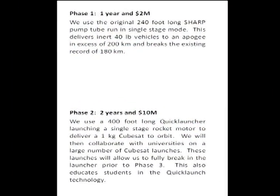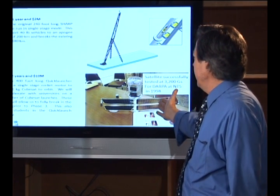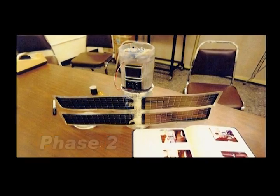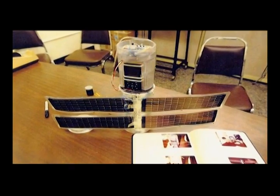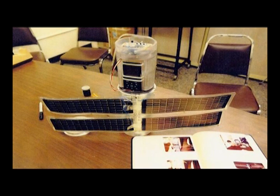Phase two, we build a 400-foot-long version of QuickLauncher to launch single-stage rocket motors in 1-kilo CubeSats. Now, this is sort of a mock-up of a CubeSat. We did this work back for DARPA in 98. This successfully launched things inside of a gas gun at 3200Gs. It had photovoltaics on it, it had store and forward, it had a TV camera, it had a lot of electronics, as well as power supplies, and it worked flawlessly.